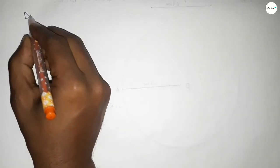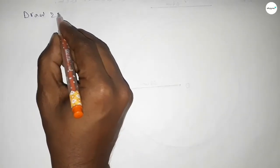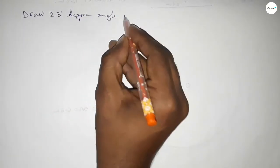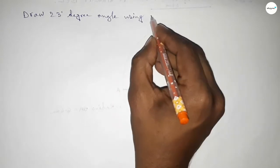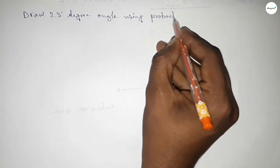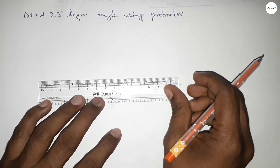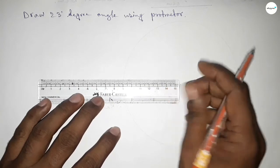Hi everyone, welcome to SI Share Classes. Today in this video we have to draw a 23-degree angle using a protractor. So let's start the video. First of all, we have to draw here a straight line of any length.